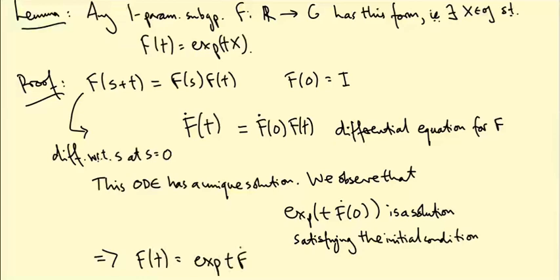Well, because when I differentiate this expression with respect to T, I just bring down a factor of F dot. And that's exactly what this differential equation is saying happens. And if I set T equal to zero, I just get the identity matrix.